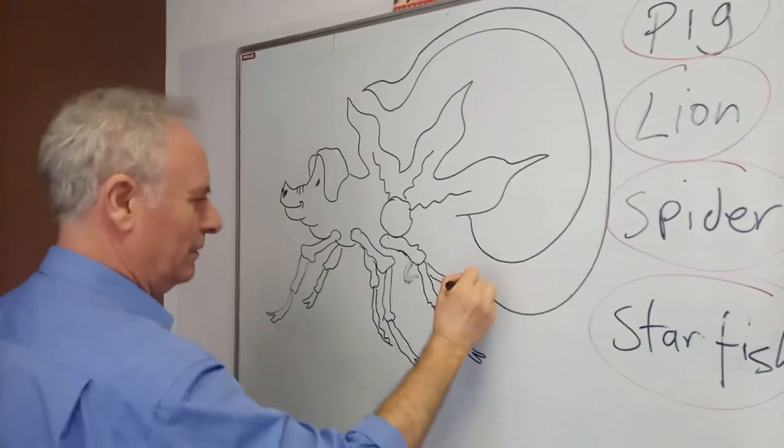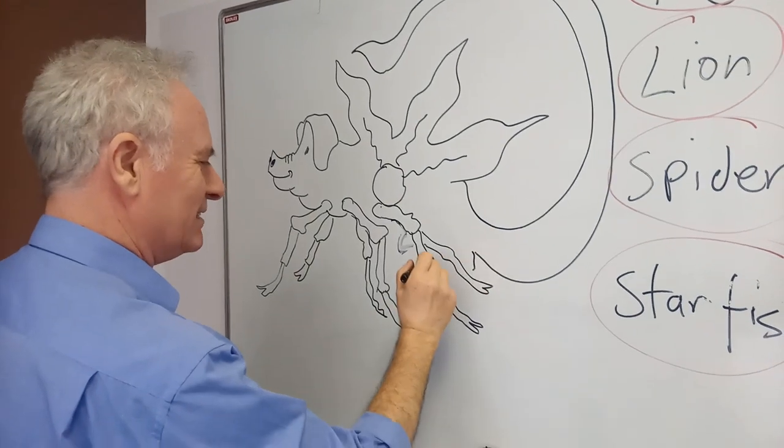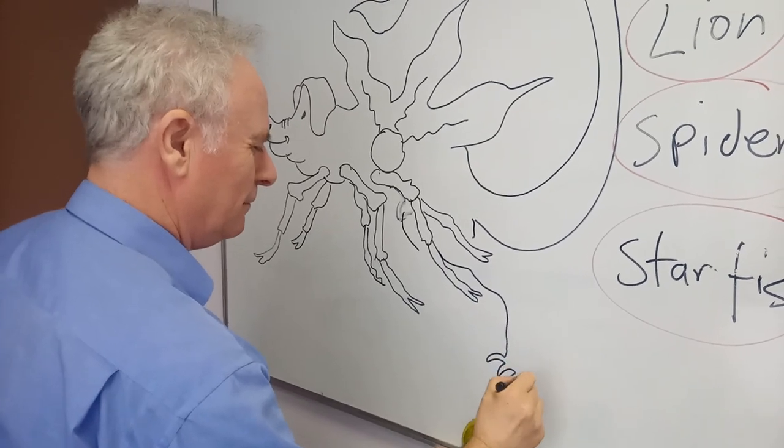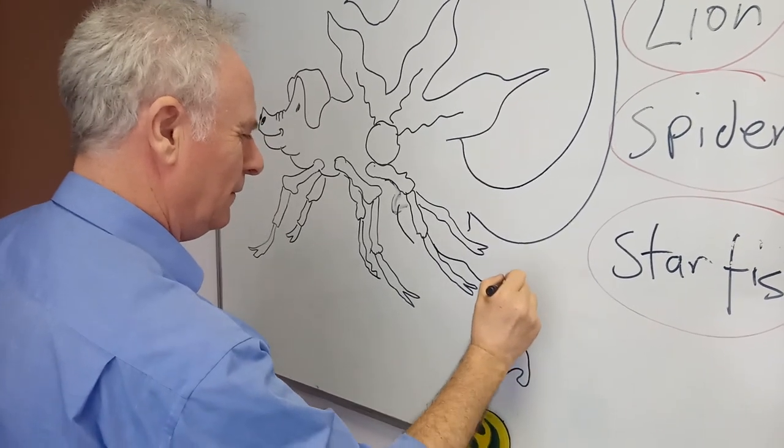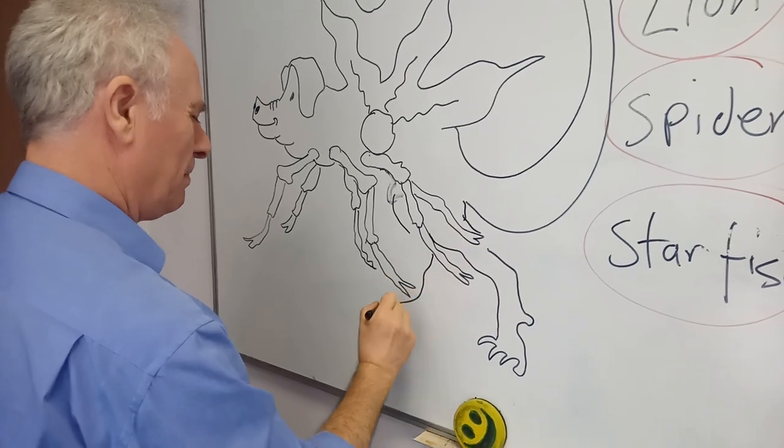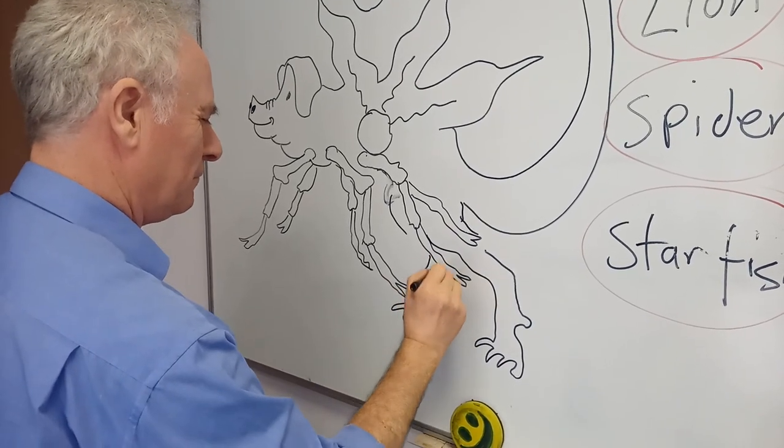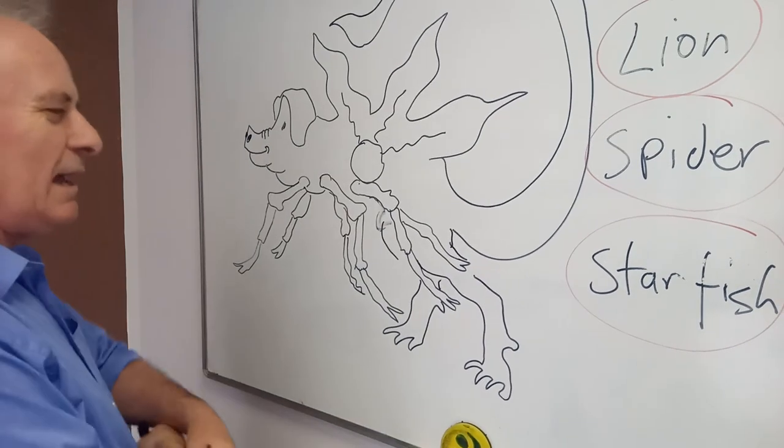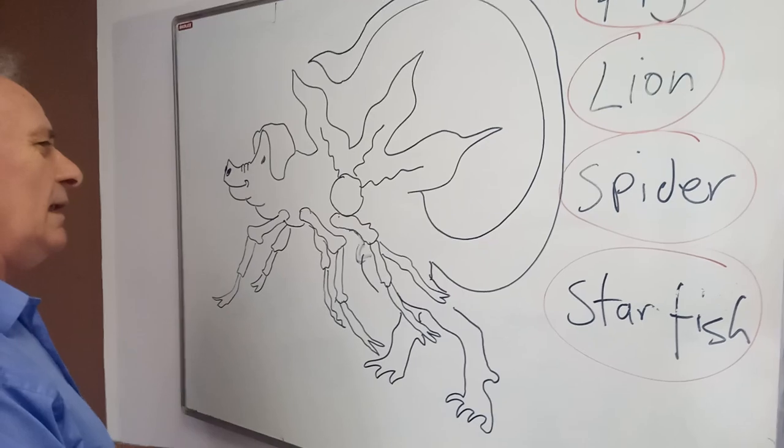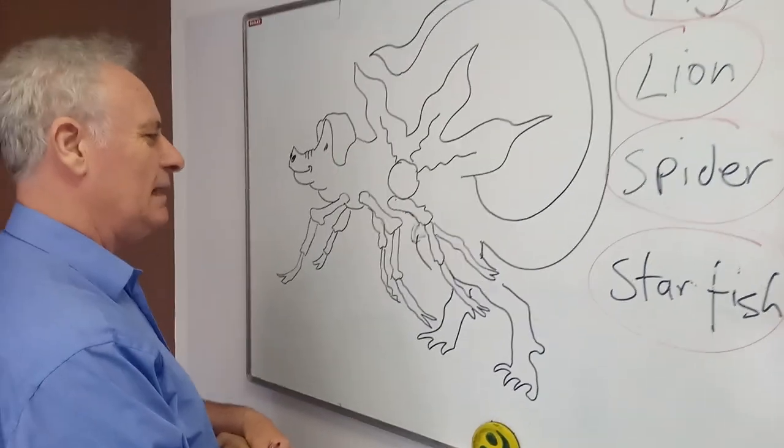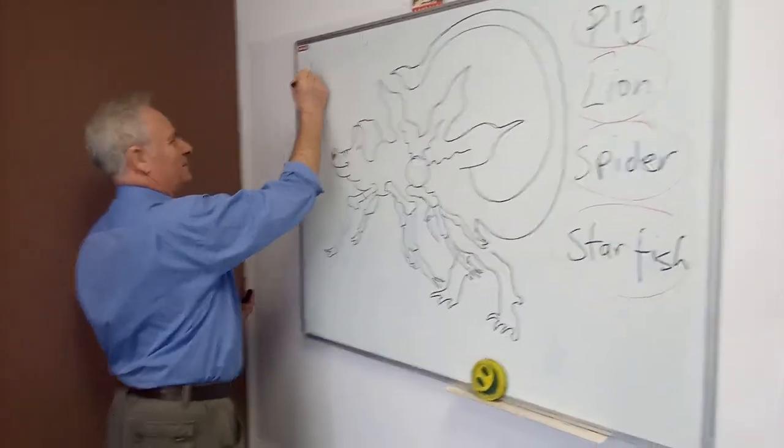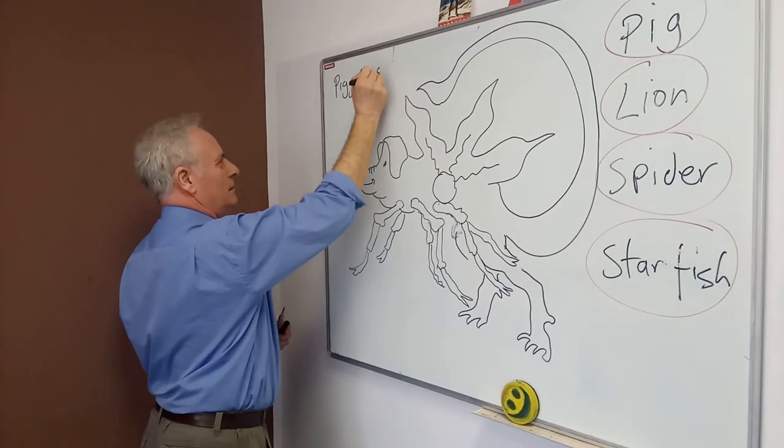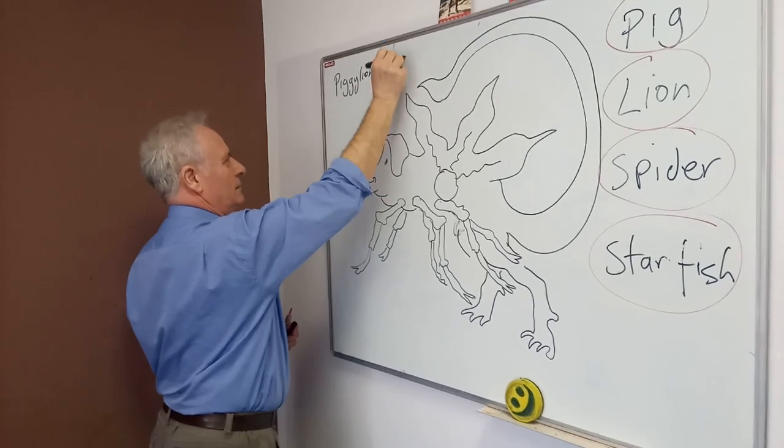Whoa! And let's give him some lion's legs as well, for running. Because spiders don't run very fast, so they don't. Now, so what do we have? A pig lion's spider starfish. And let's call him the piggy lion's spider fish. Piggy. Lion. Spider fish.